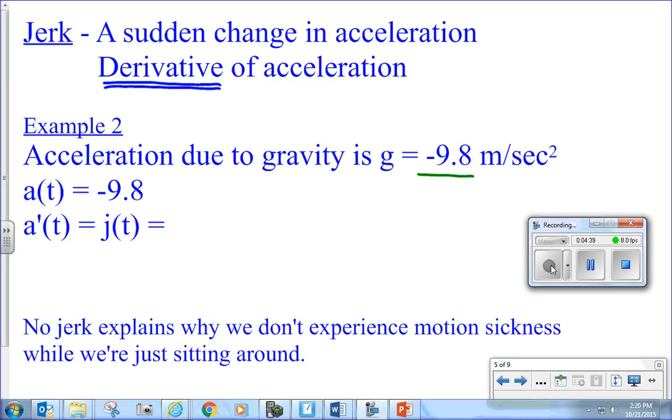So, what we're going to do is this. Acceleration due to gravity is negative 9.8 meters per second squared. What is the jerk of a constant? What's the derivative of a constant? Zero.